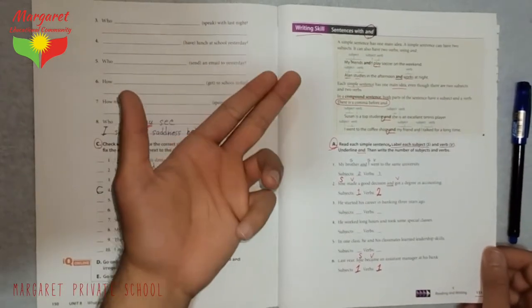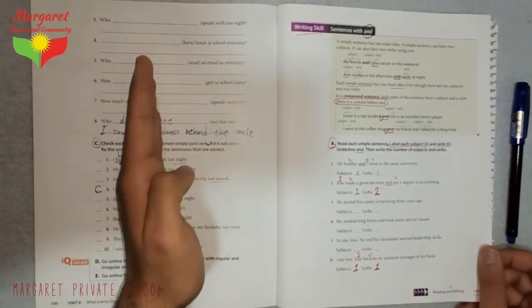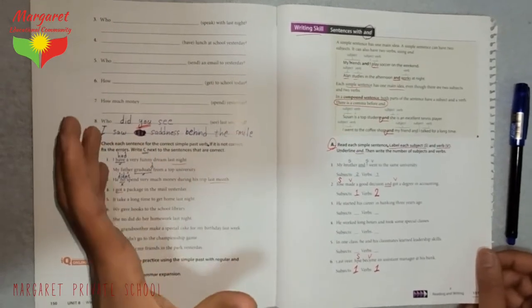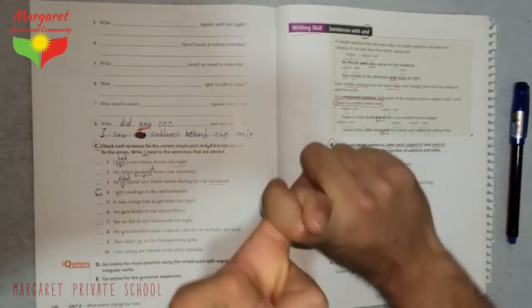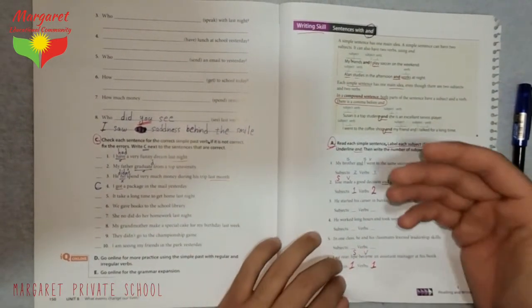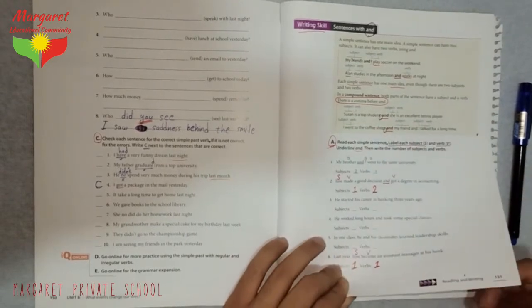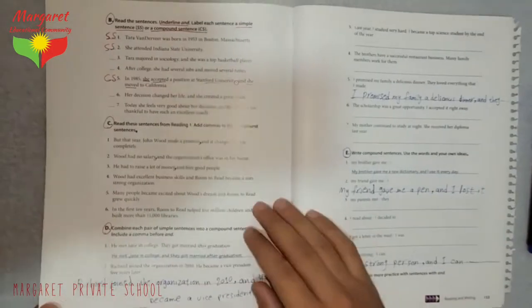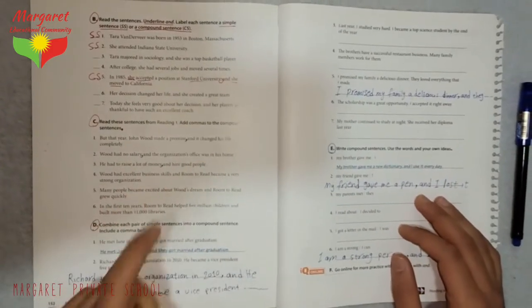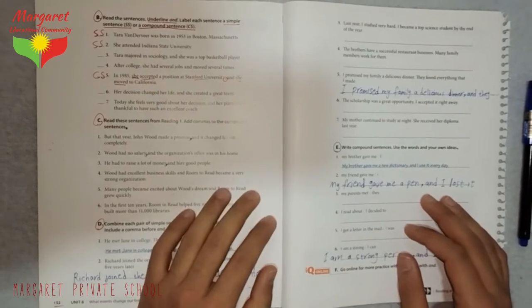A simple sentence has a subject and a verb. But compound sentence, we have two sentences, they are linked together by 'and,' and they have two ideas in them, not only one idea, two ideas. Here we finish the remaining exercises of the grammar and the usage of 'and.'